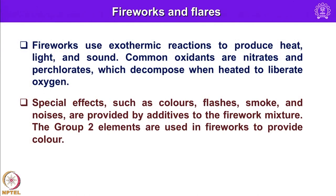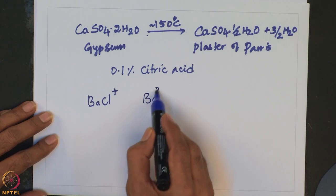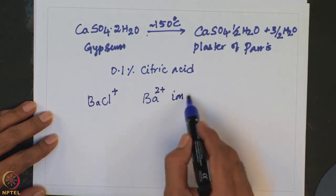In fireworks and flares, alkaline earth metals are used. Fireworks use exothermic reactions to produce heat, light, and sound. Common oxidants are nitrates and perchlorates, which decompose when heated to liberate oxygen. Special effects such as colors, flashes, smoke, and noises are provided by additives to the firework mixture. The group 2 elements are used in fireworks to provide color. Barium compounds are added to fireworks to produce green, apple-green flames. The species responsible for the color is BaCl⁺, which is produced when Ba²⁺ combines with Cl⁻.